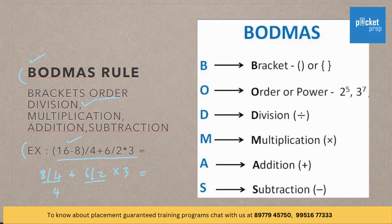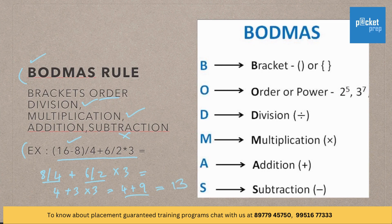So 4 plus 3 into 3 is equal to how much? After division comes multiplication. Therefore, 4 plus 9. Finally, we have addition. We do not have subtraction here. So 4 plus 9 is equal to 13.